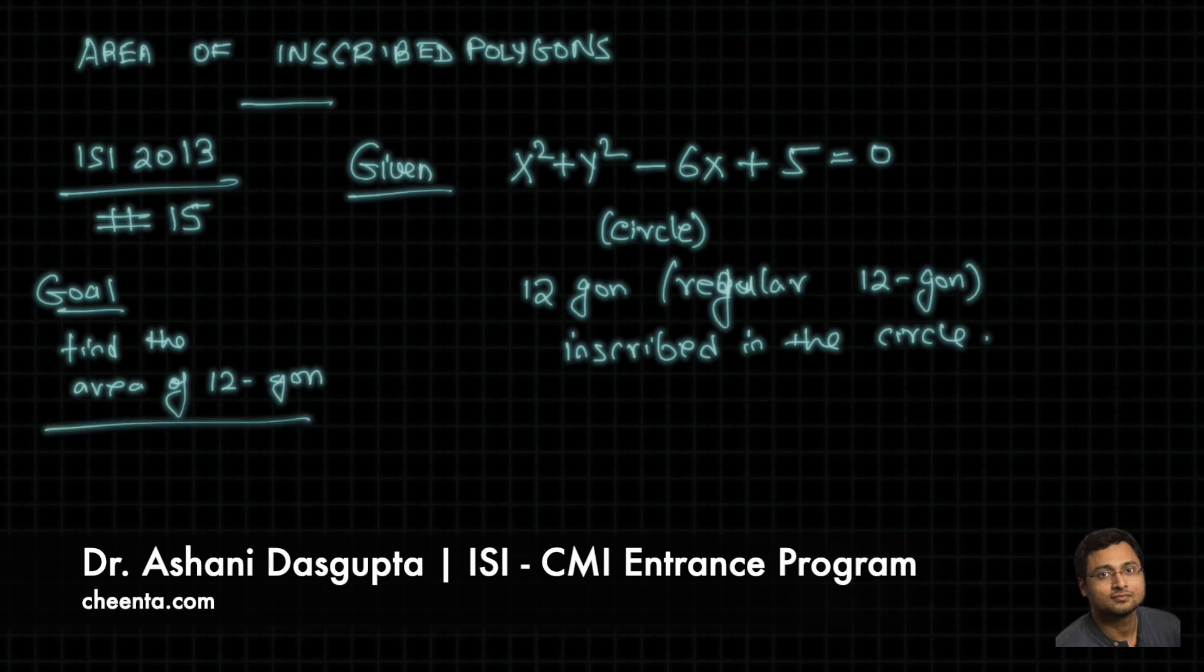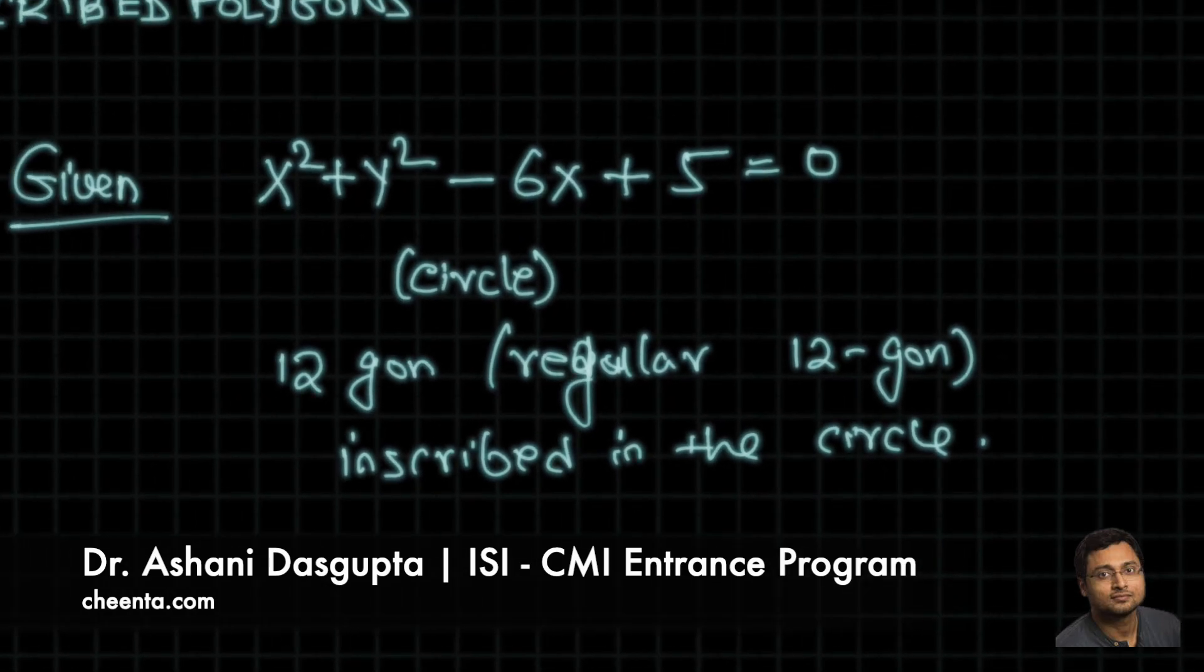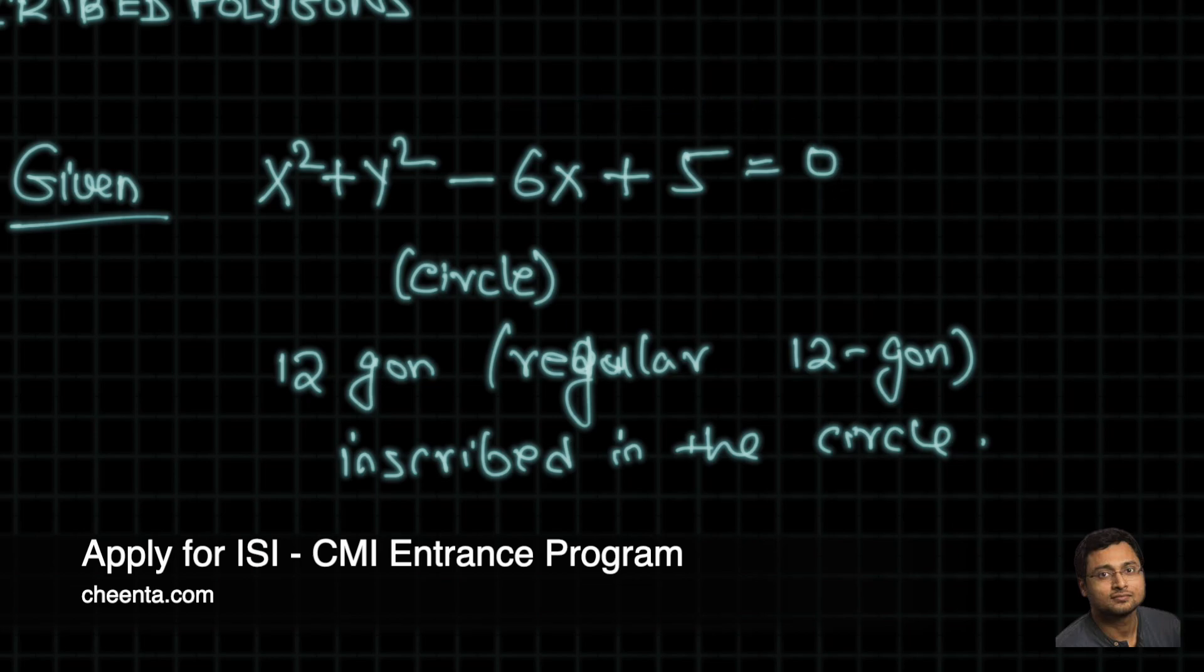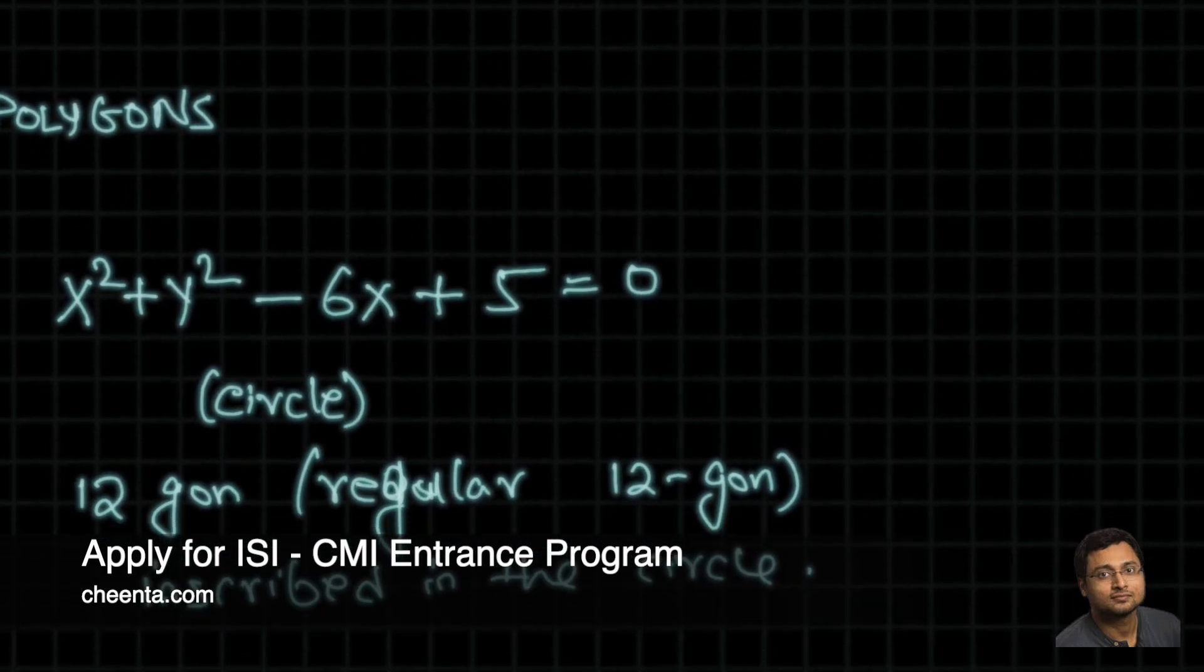What we really need is the radius of this circle. We need to know how big this circle is, and then we can do the area computation without even worrying about the other information. So let's find the radius of this circle. It's quite simple actually.